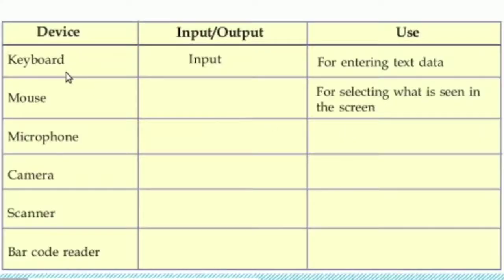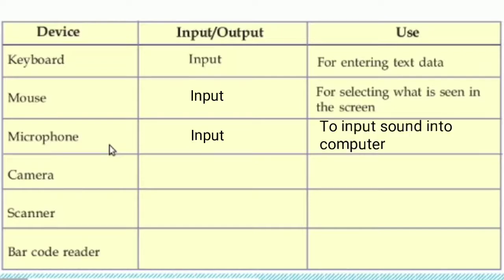The first device is the keyboard. It is an input device, used for entering text data into the computer. The second is the mouse — it is an input device, used for selecting what is seen on the screen. Next is the microphone, also an input device, used for giving sound to the computer, to input sound into the computer.